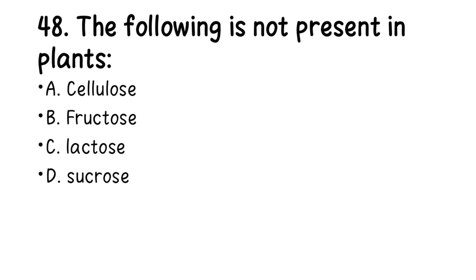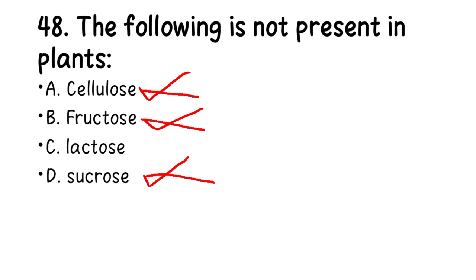Number 48. The following is NOT present in plants: A. Cellulose, B. Fructose, C. Lactose, D. Sucrose. Cellulose is found in all plants; fructose is found mainly in fruits; sucrose comes from sugar cane. The right answer is C, lactose — the milk sugar. Lactose is only obtained from the milk of mammals, so it is not present in plants.